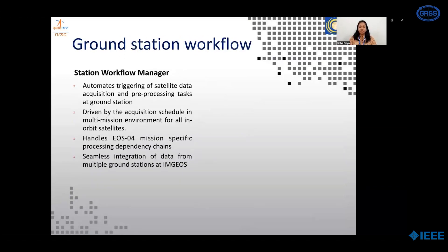The next element in the ground station workflow is the Station Workflow Manager. It is the centralized element to manage automation of operational tasks at the ground station, from data reception to pre-processing of data in a multi-mission environment for all in-orbit satellites. Driven by the acquisition schedule, it handles EOS-04 mission-specific processing chains and integrates data received from multiple ground stations.